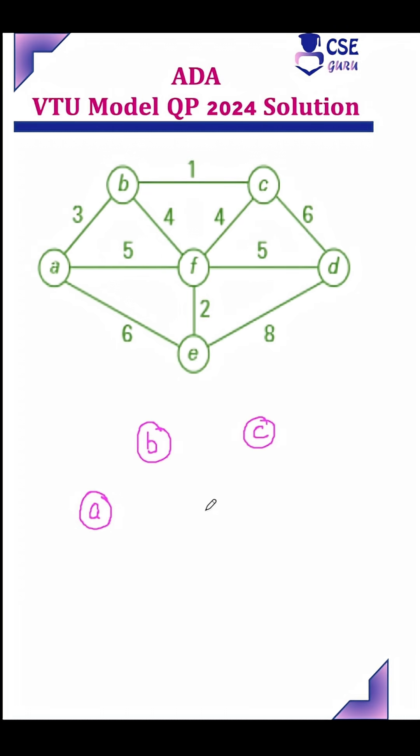For Kruskal's algorithm, first we need to create a disjoint set data structure. That is, include only the vertices, not the edges. And consider the edges in ascending order.